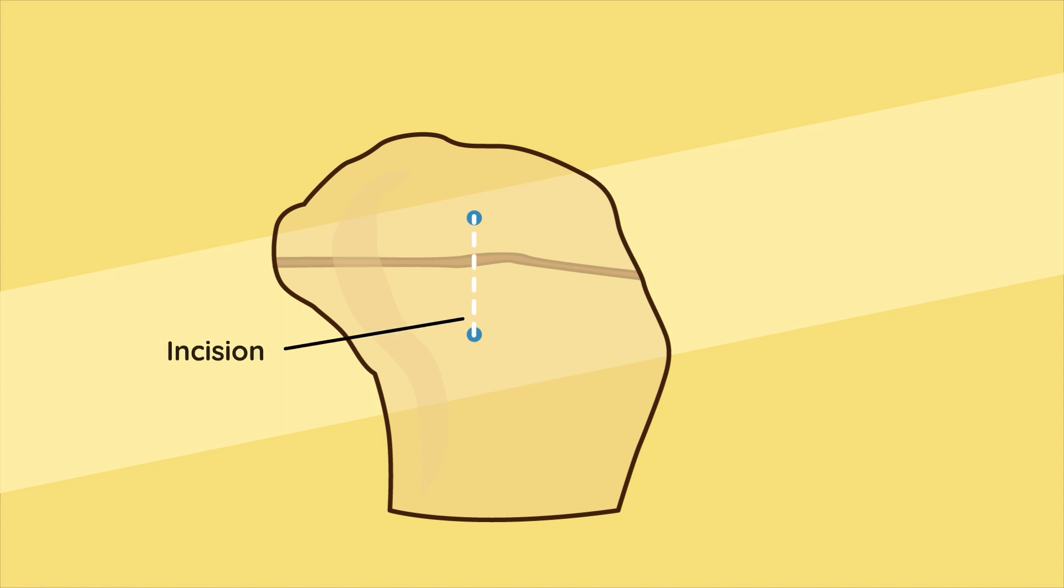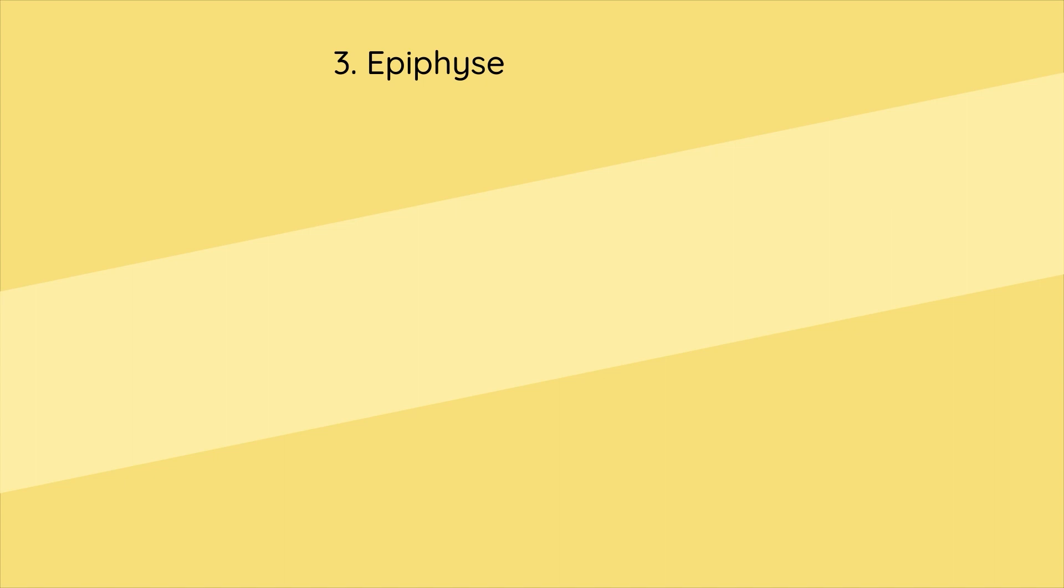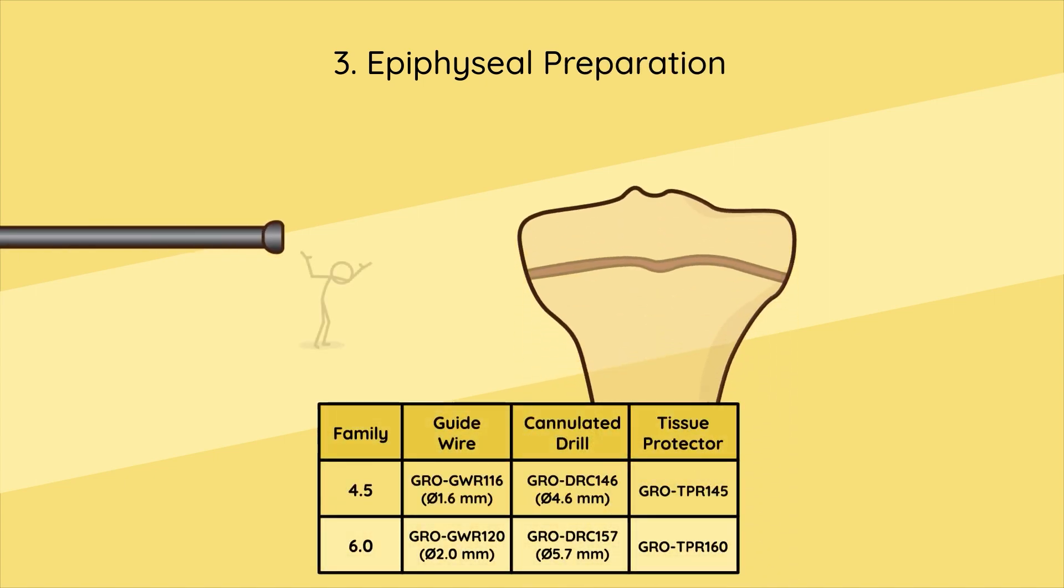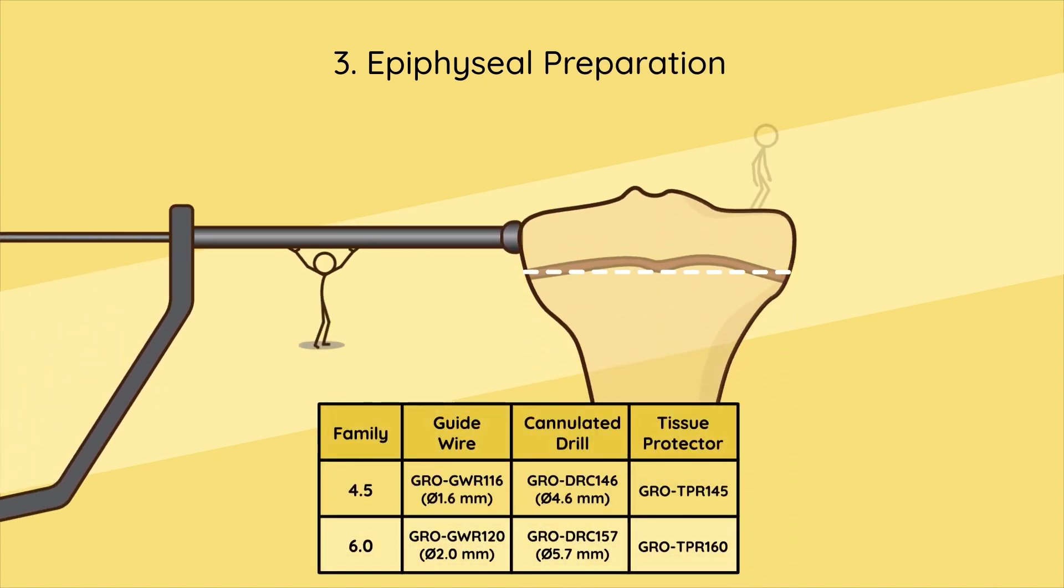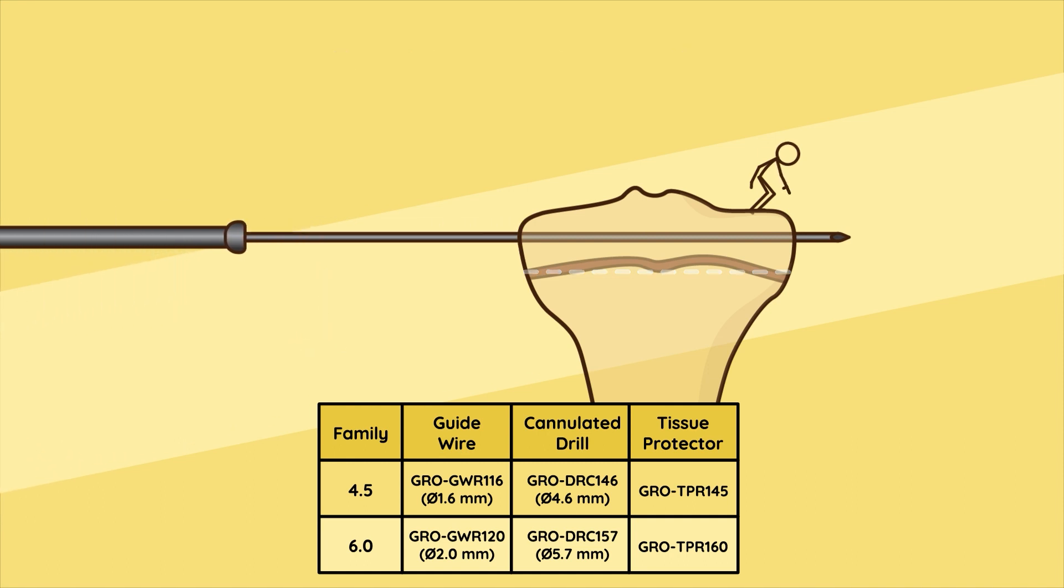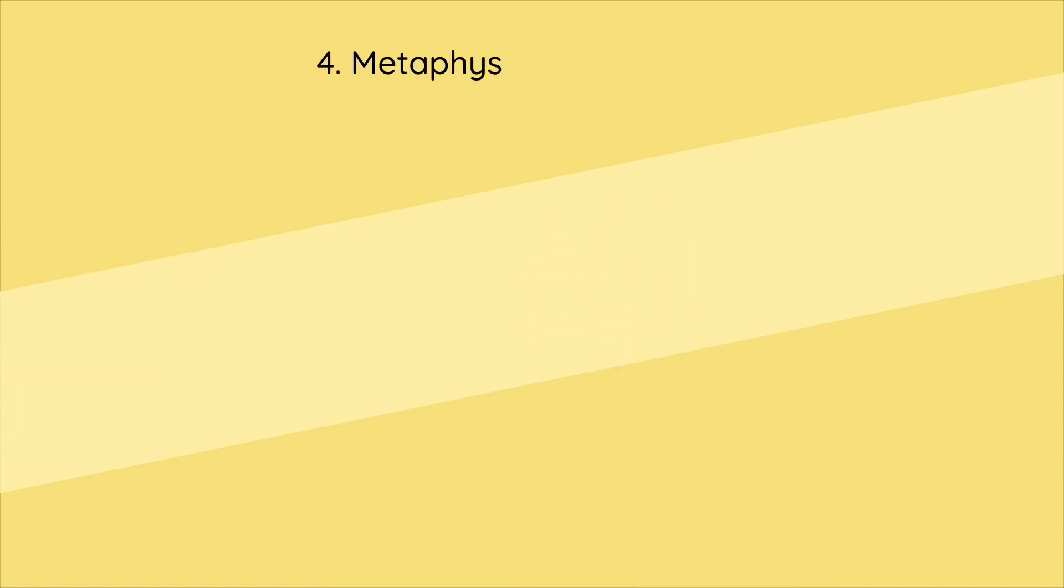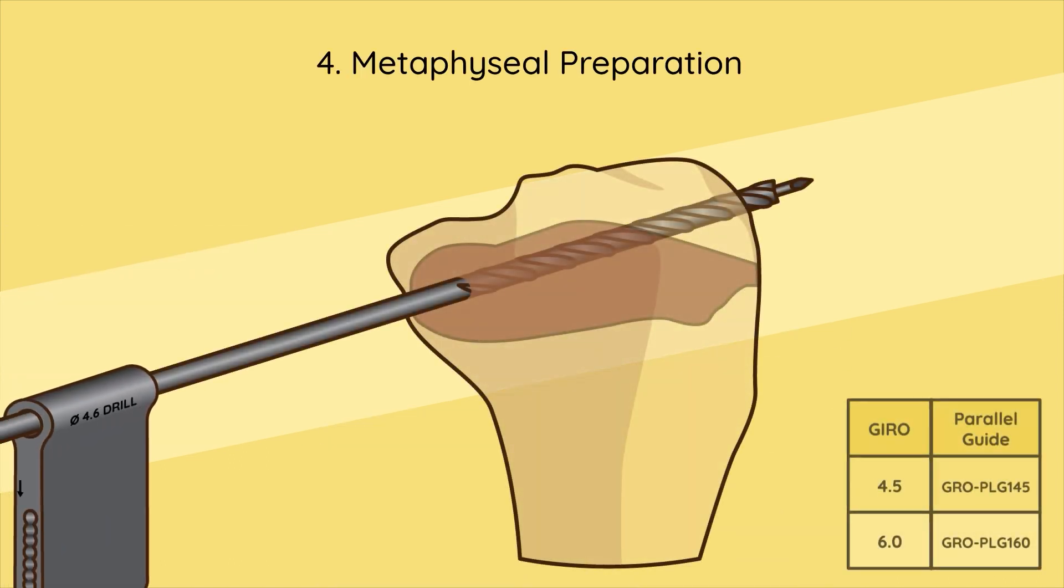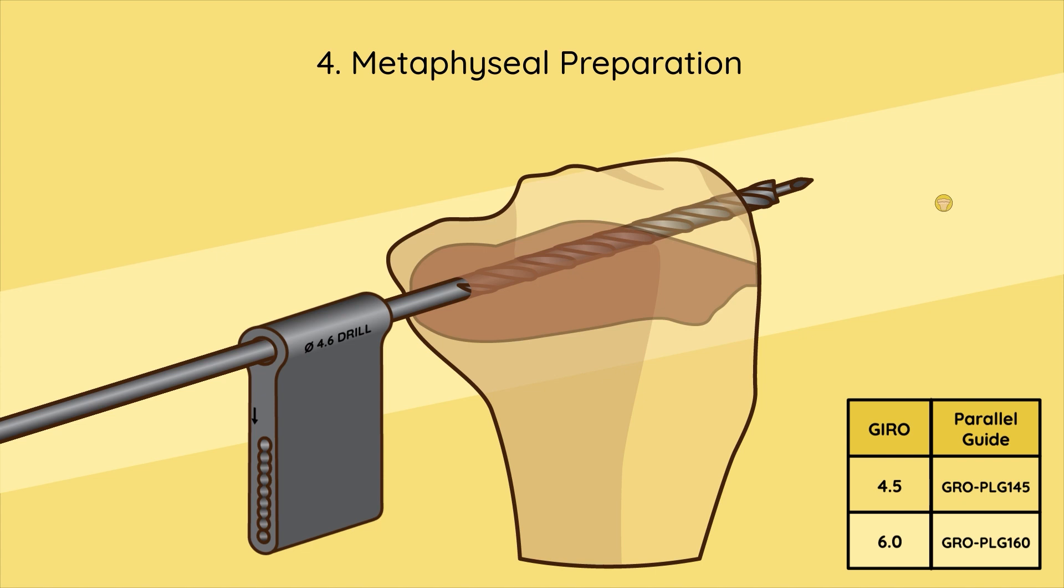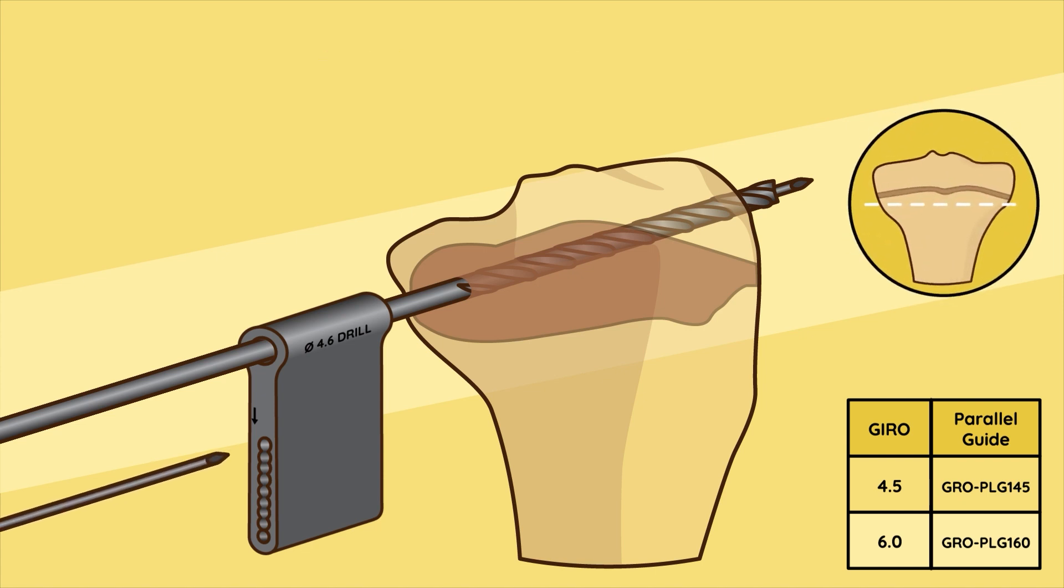Step three - epiphyseal preparation: Insert the guide wire parallel to the growth plate until it exits the opposite cortex. Drill the epiphyseal bicortical channel over the guide wire. Step four - metaphyseal preparation: Position the parallel guide over the drill perpendicular to the growth plate. Insert the metaphyseal guide wire into the bone cortex in the desired position.